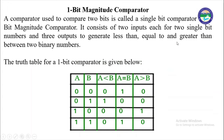We have different types of magnitude comparators. First, we will see a 1-bit magnitude comparator. As the name suggests, a 1-bit magnitude comparator consists of two inputs and three outputs. This type is also known as a single-bit comparator, and it has two single-bit number inputs and three outputs to generate less than, equal to, and greater than between two binary numbers.